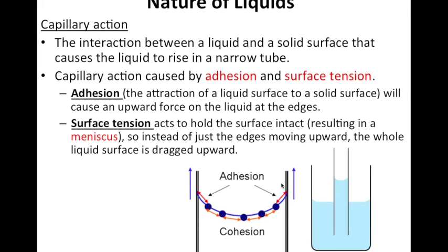It actually forms the other way in mercury. For example, the meniscus is a hump rather than a dip. And that is because of its chemical properties, but surface tension acts to hold the surface intact, resulting in a meniscus.